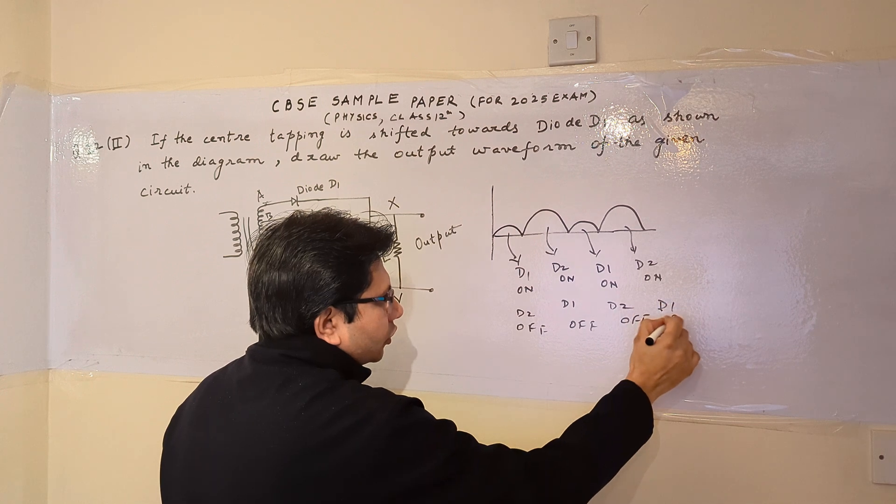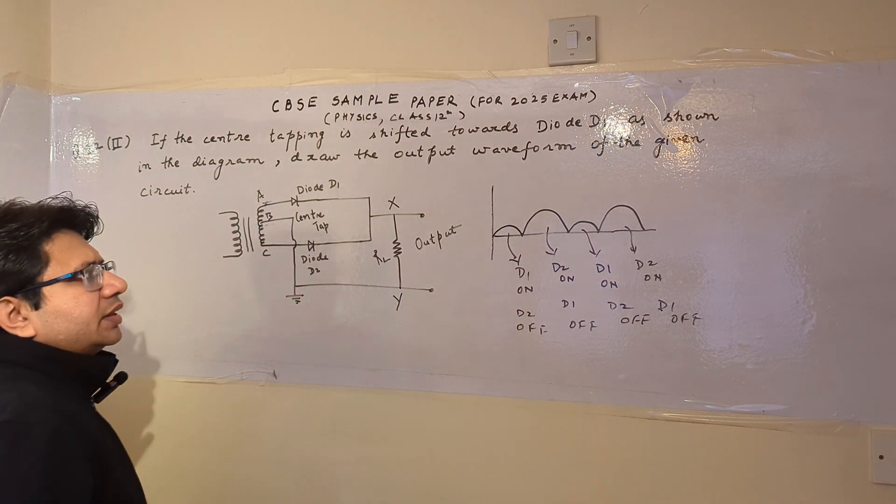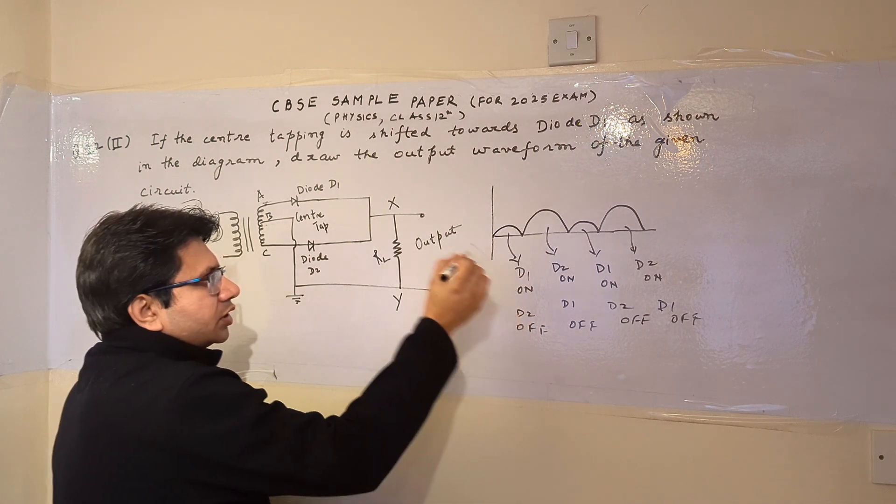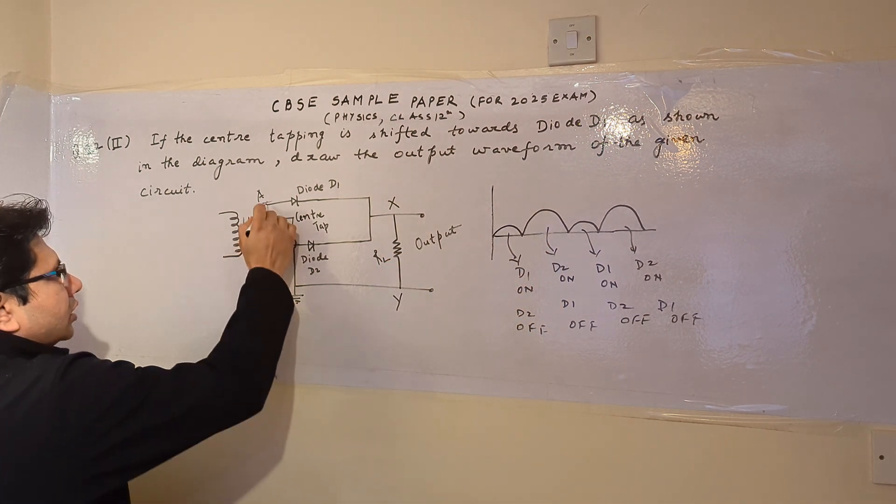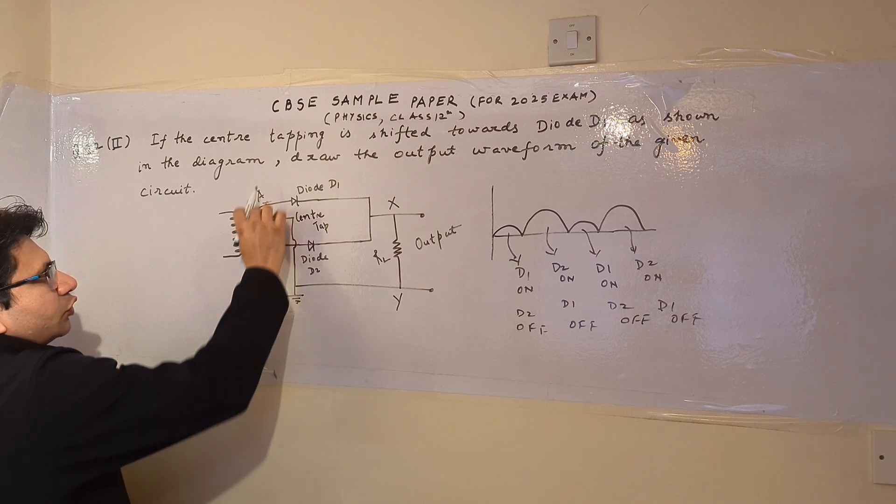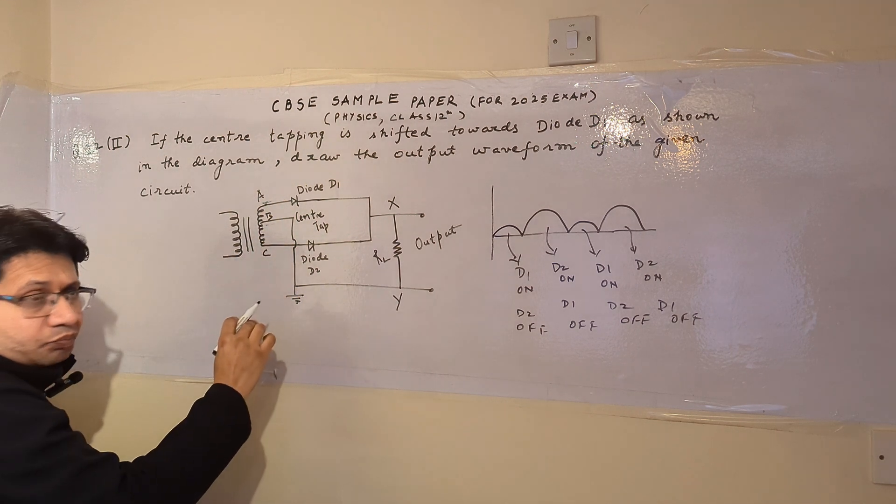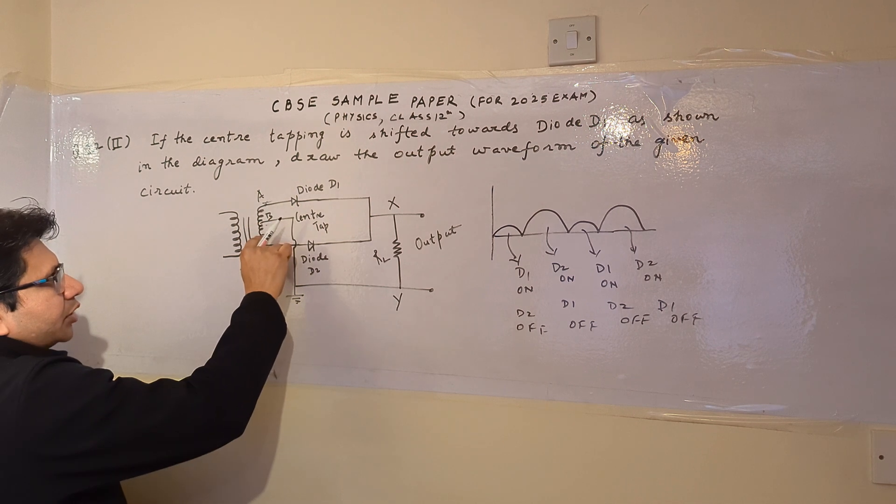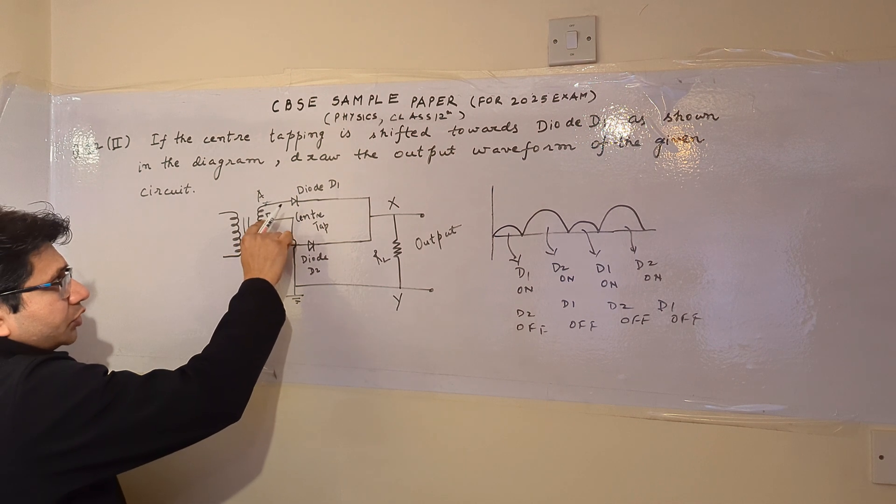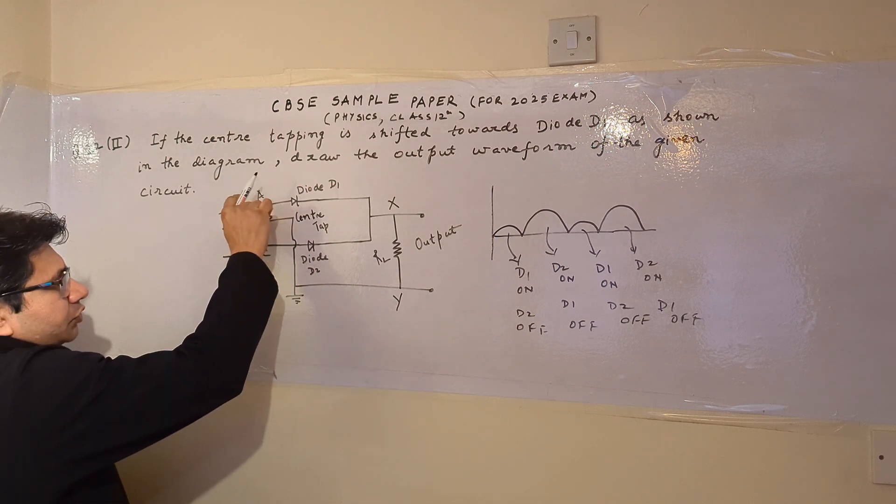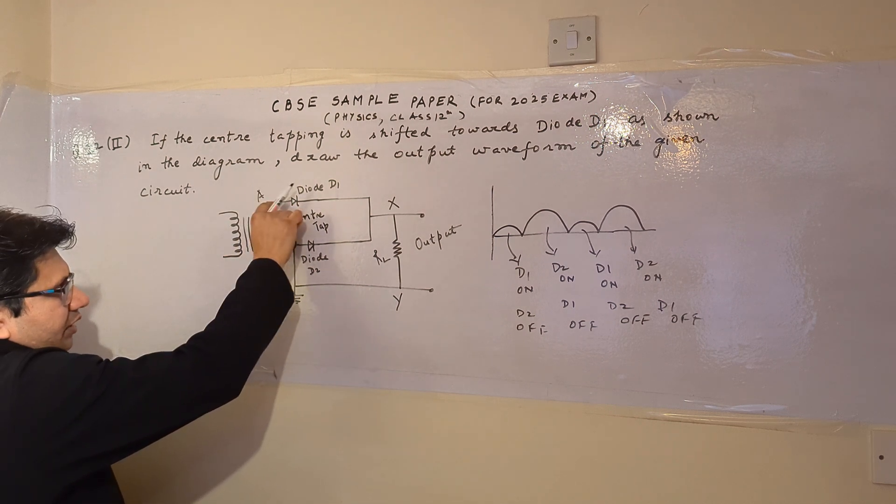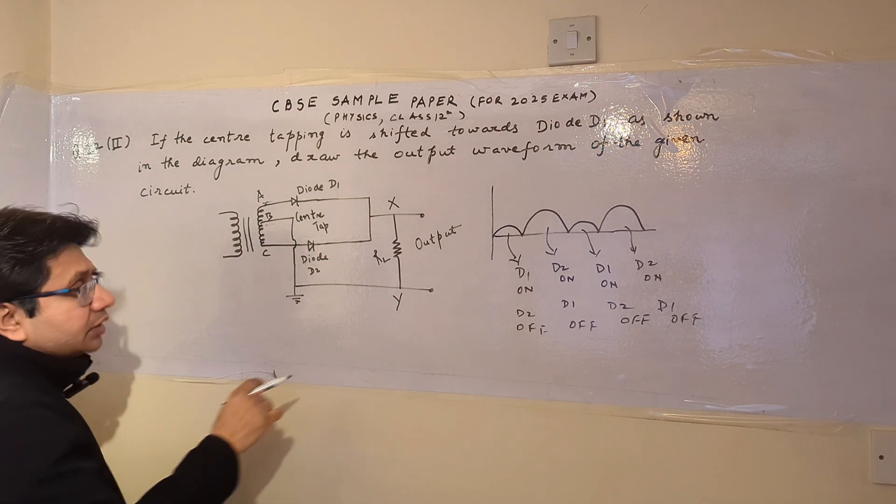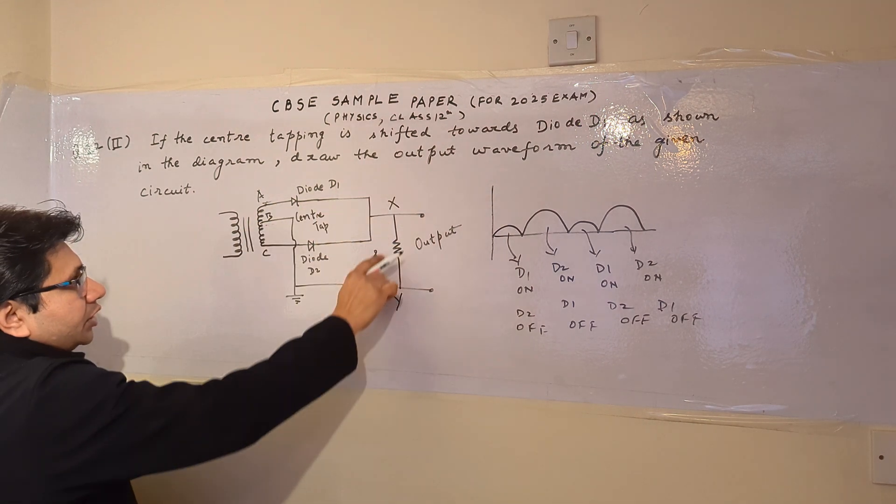The reason for the difference in the heights of these particular waveforms is due to the uneven number of turns between A-B and B-C. As the number of turns between A and B are less compared to the number of turns between B and C, the voltage which we obtain across A-B is less compared to the voltage we get across B-C.